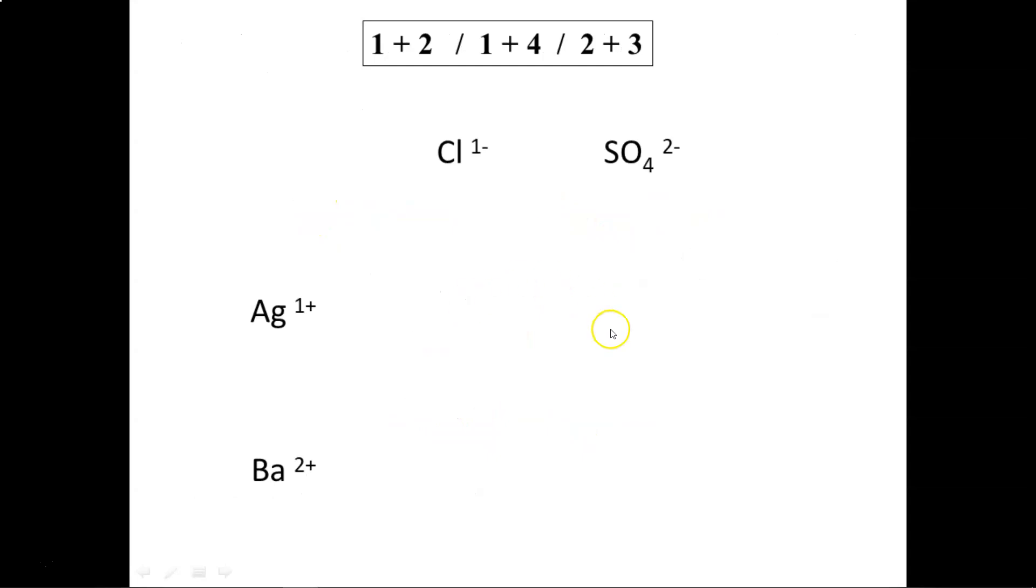So the first thing I'm going to do is organize these ions, ions on one side, and ions on the other. Because I know that when they partner up to form precipitates, it must always be a positive ion partnered with a negative ion. You will not see two negative ions combined together, you will not see two positive ions combined together, because they would repel due to their like charges.